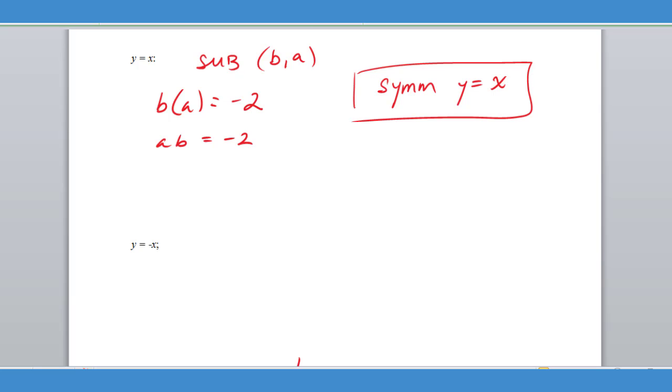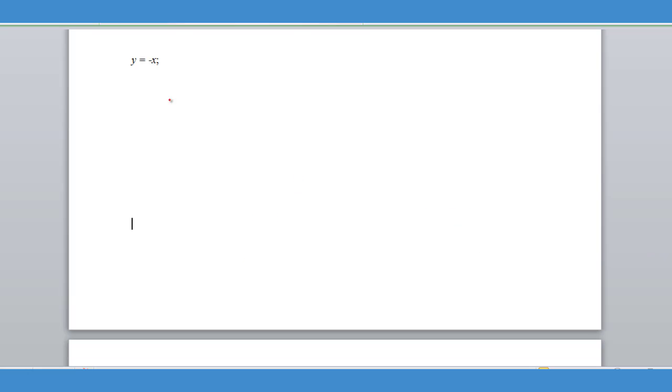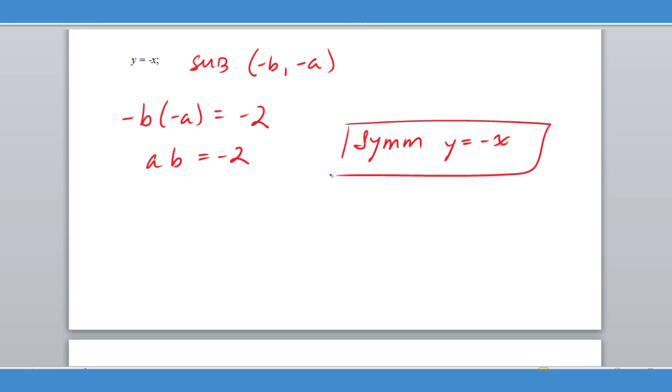Let's check equivalency across the other diagonal. This time we're going to substitute for our test negative B and negative A. So we're going to have negative B times negative A equals negative two, which gives me AB equals negative two and that is also equivalent. That tells us it's also symmetric across that diagonal. So this actually has two lines of symmetry.